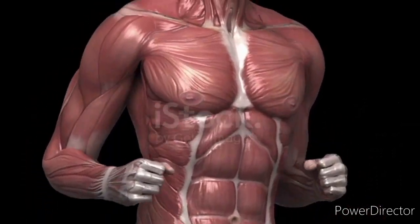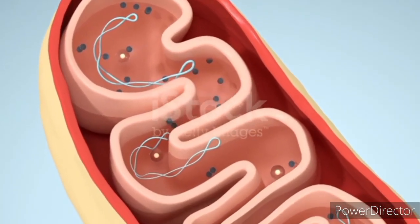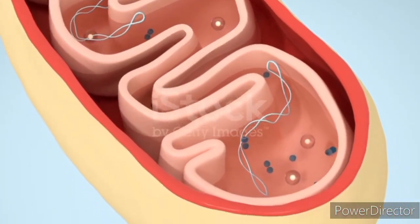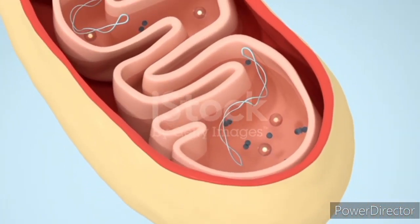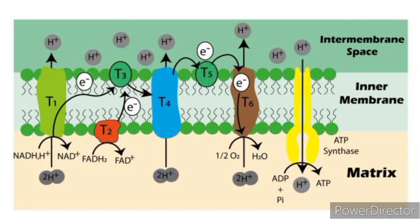ROS production. Mitochondria generate reactive oxygen species, ROS, as byproducts of energy production. While ROS have roles in cell signaling, excessive ROS can damage cellular components and contribute to aging and various diseases if not properly regulated.